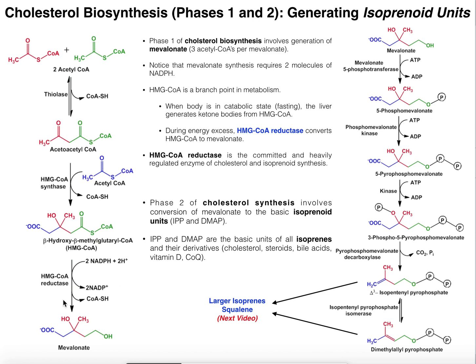To summarize: phase one is generating mevalonate, where we see HMG-CoA reductase as the committed and heavily regulated step. Phase two is the generation of the two isoprenes, IPP and DMAPP. We can then condense those into larger isoprenes to generate squalene. Also remember that HMG-CoA is a branch point — from the liver's perspective, in a fasting state HMG-CoA is consumed by HMG-CoA lyase, the committed step in ketone body synthesis. In the fed state, HMG-CoA goes toward mevalonate via HMG-CoA reductase, bypassing the lyase.